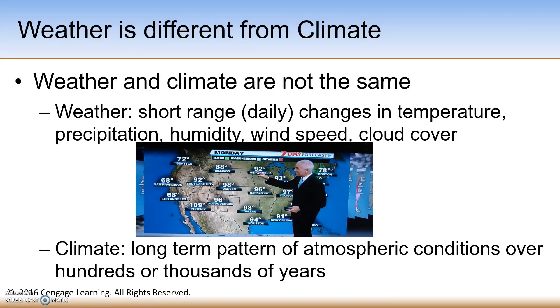Weather is different from climate. Weather pertains to short-range daily changes in temperature, precipitation, humidity, wind speed, and cloud cover — as depicted in the picture of a weatherman forecasting temperatures across the United States. Climate, however, is a long-term pattern of atmospheric conditions over hundreds of thousands of years.